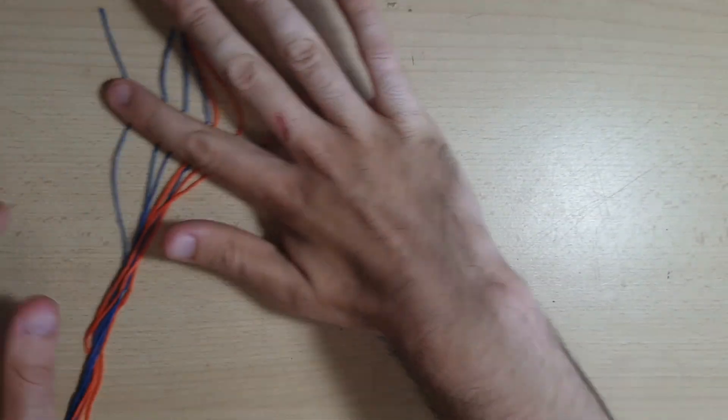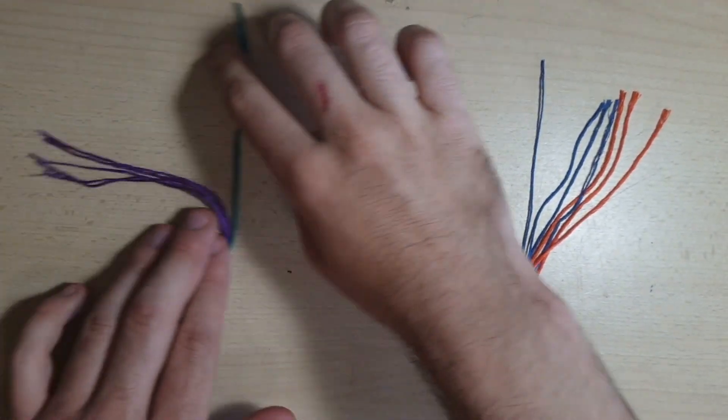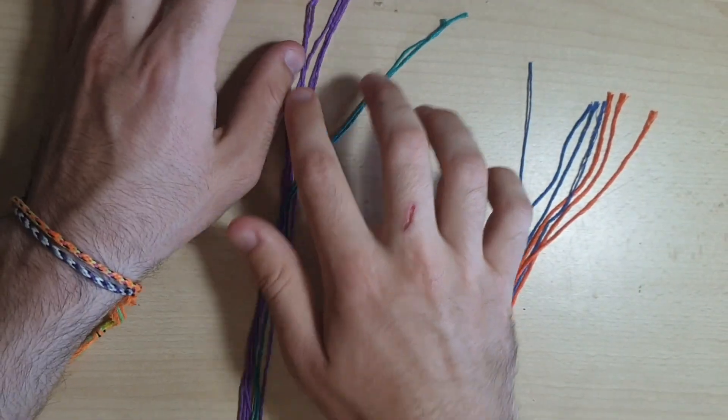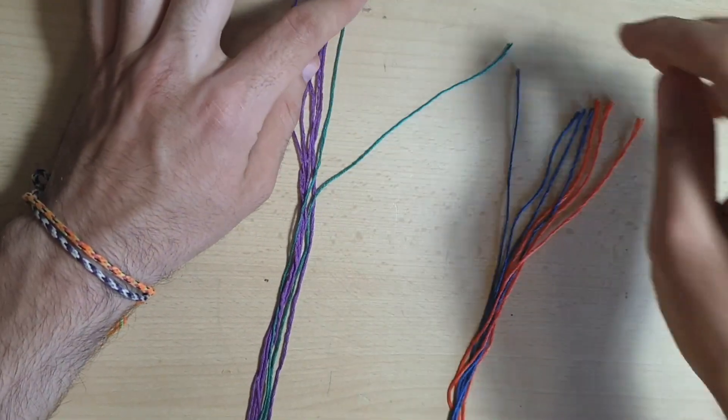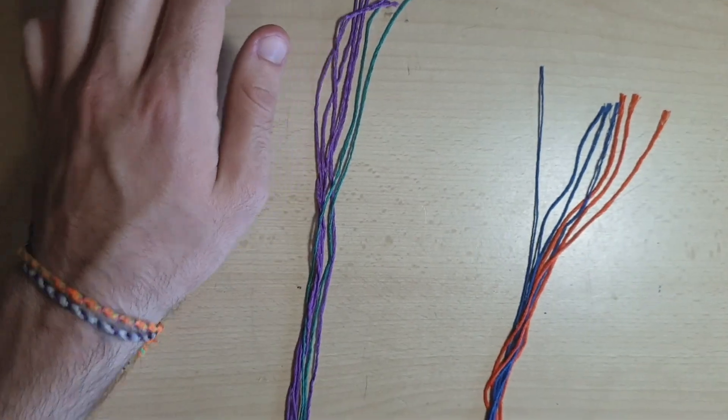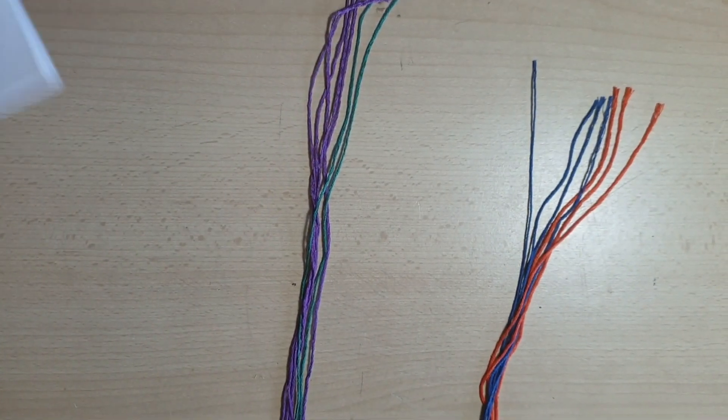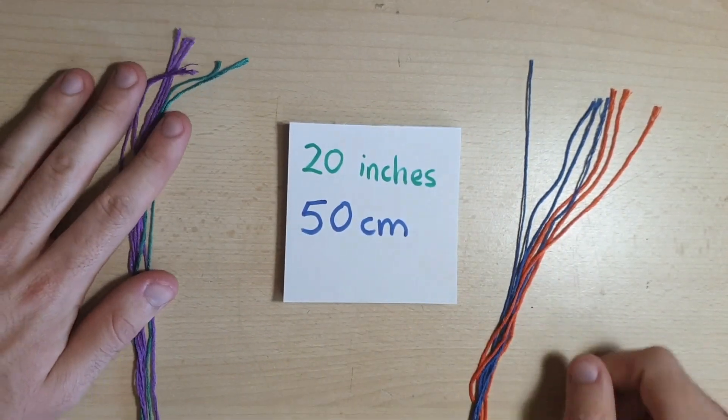We also need some friendship bracelet string. We tend to use two colours and we'll either use five strands of one colour and two of another, or three strands of one colour and four of the other. These need to be cut to approximately 20 inches or 50 centimeters.